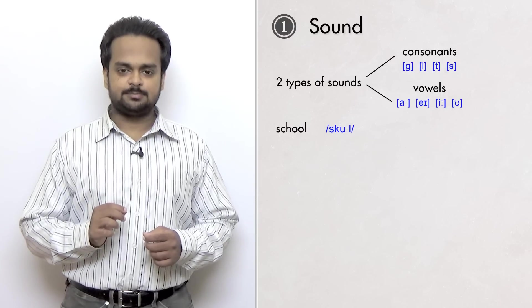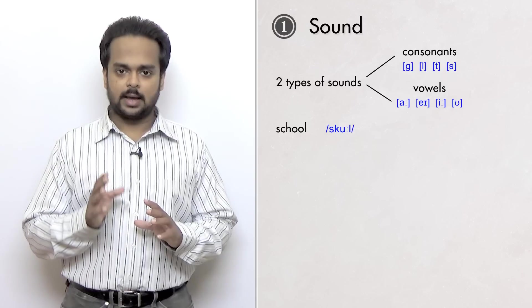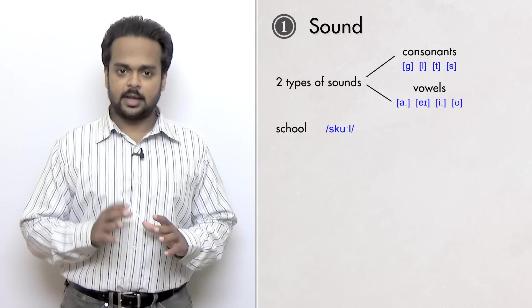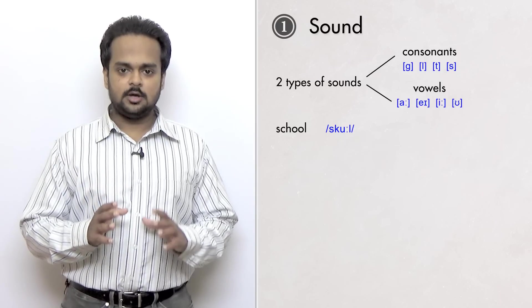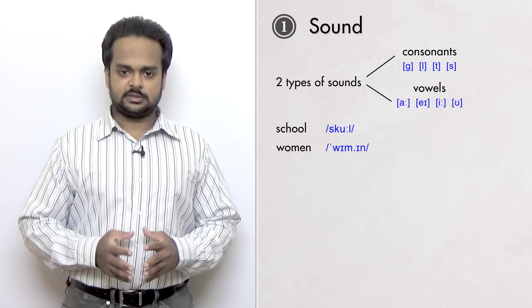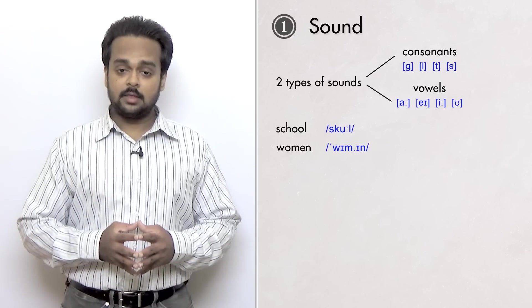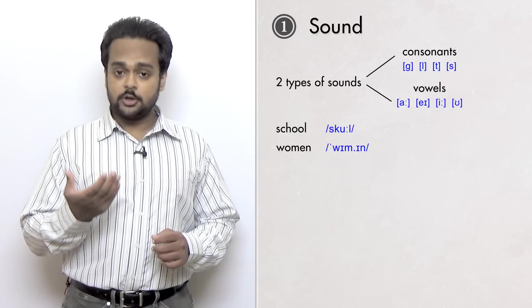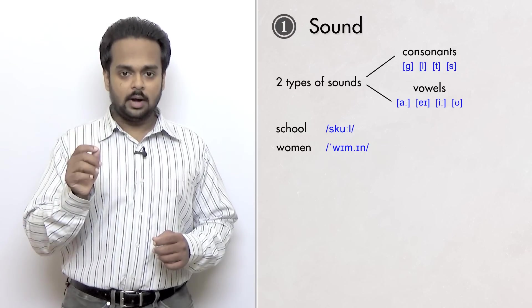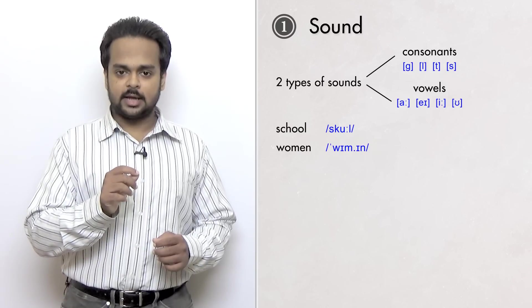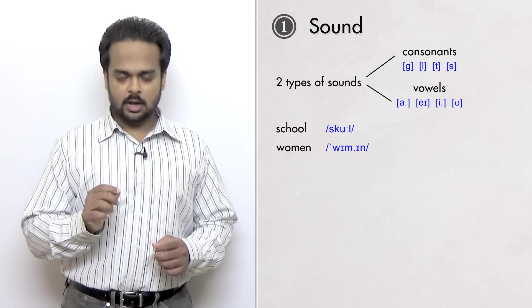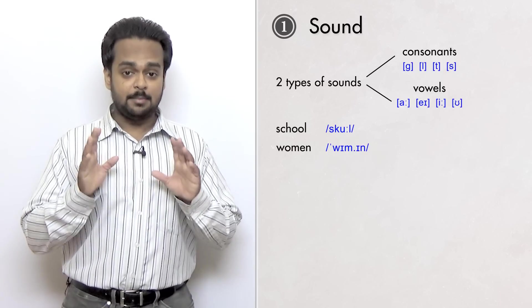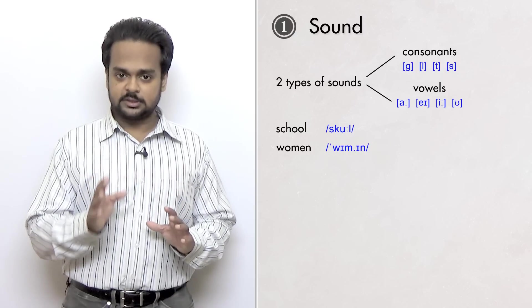Every word in English has both consonant sounds like G, L, T, S, etc., and vowel sounds like A, A, A, E, E, U, and so on. Here's another example – women. This word is written with five letters and it's spoken with five sounds, but notice that both the O and the E are pronounced as short I sounds – women. This is because in English, the spelling and pronunciation of a word can be very different.